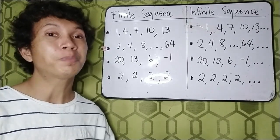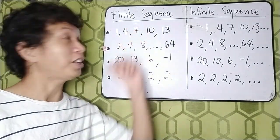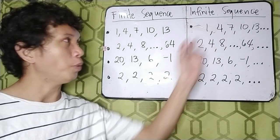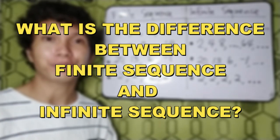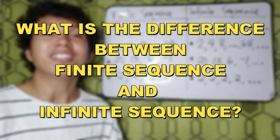I have here two groups of sequences, the finite sequence and the infinite sequence. What do you think is the difference between the two? Let's talk about it in this new learned video.